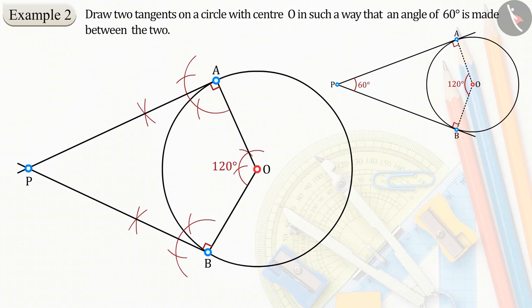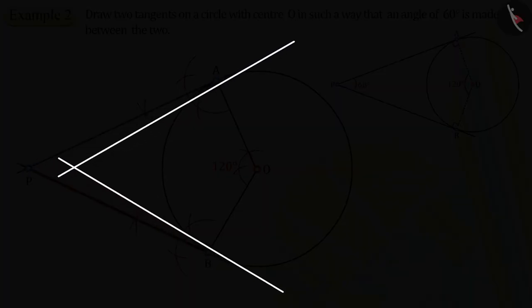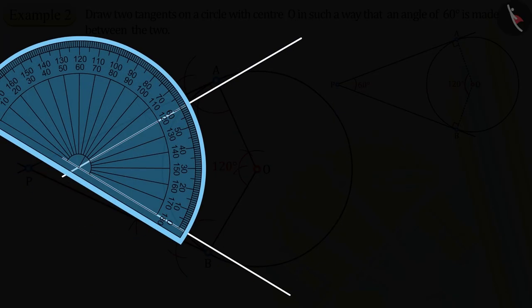The two intersect each other at point P on extending them. Thus, we get two desired tangents PA and PB. On checking, you will find that the angle APB between the tangents PA and PB is 60 degrees.